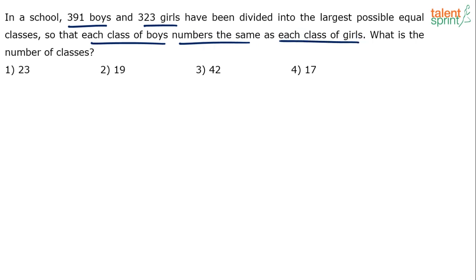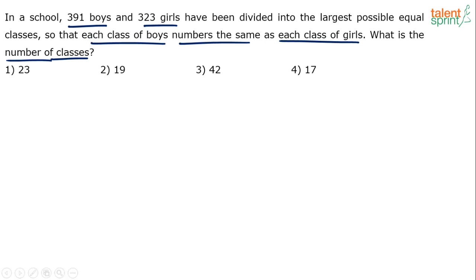The classes will have only boys or only girls — it is not a mix. Whichever class has boys has the same number of boys as the number of girls in the girls' classes. The question is: what is the total number of classes? In summary, 391 boys and 323 girls are divided into classes.